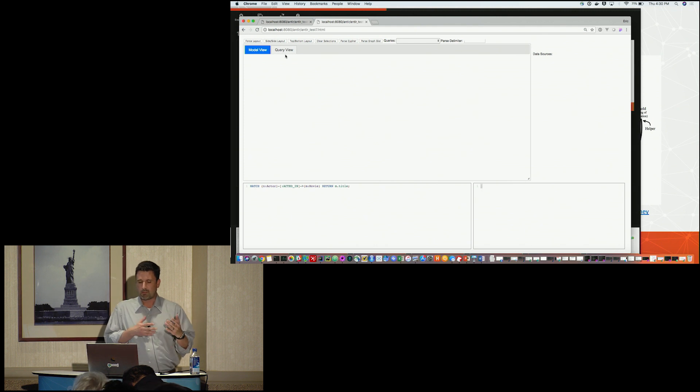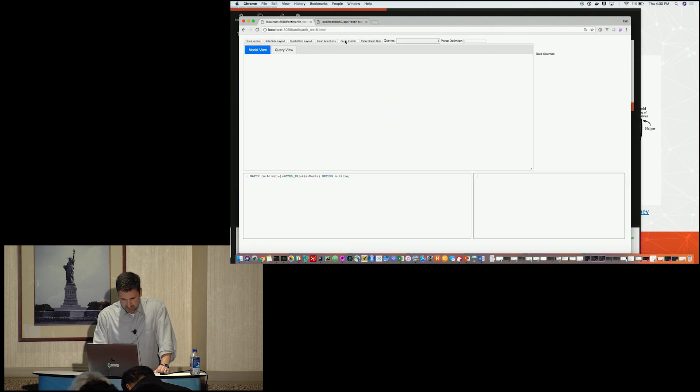But I've got a model view tab and a query view tab. Before I show the hero's journey, I have this little cipher statement down here, which is kind of from the movie example - movie or actor acting in movie. I say parse cipher. And we have the visualization of actor acting in movie.